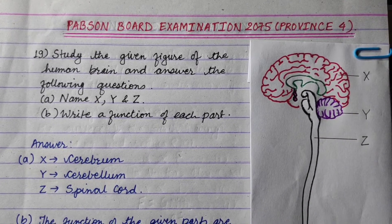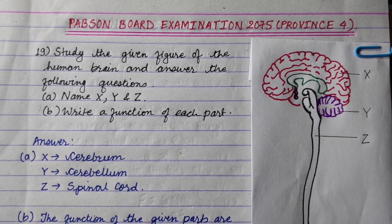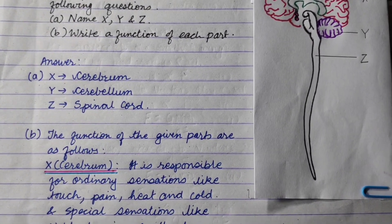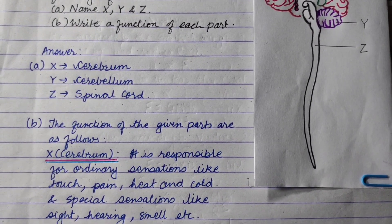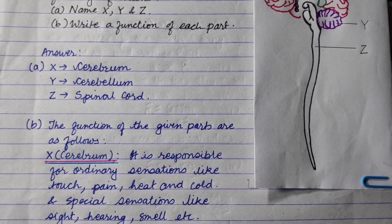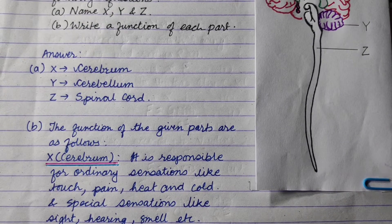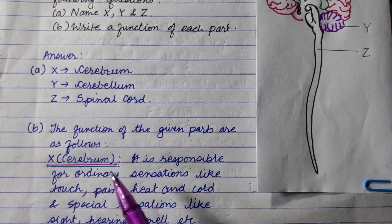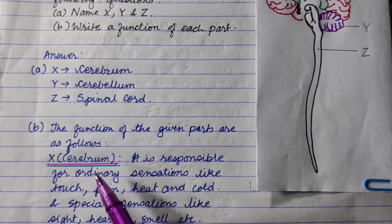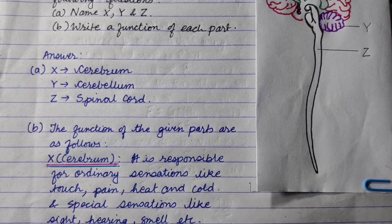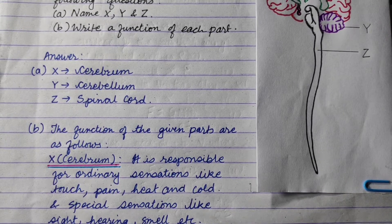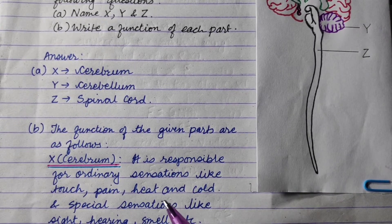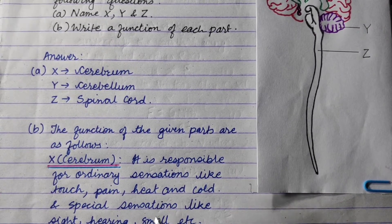Now let's look at the functions. The function of the given parts are as follows. First, X is the Cerebrum — the largest part of the brain. It controls memory and intelligence.